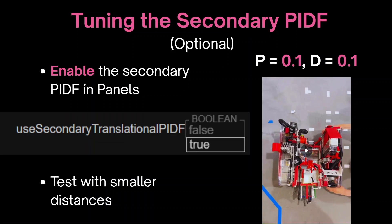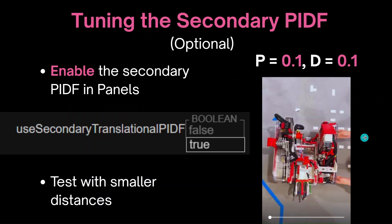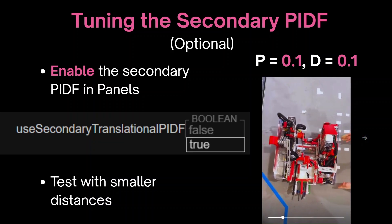Tuning the secondary PIDF is very similar to tuning the main one, and it's almost the exact same process. However, we're most concerned with tuning the robot's ability to correct from smaller errors, and we'll be testing with smaller distances. Shown here is a fairly well-tuned secondary PIDF.